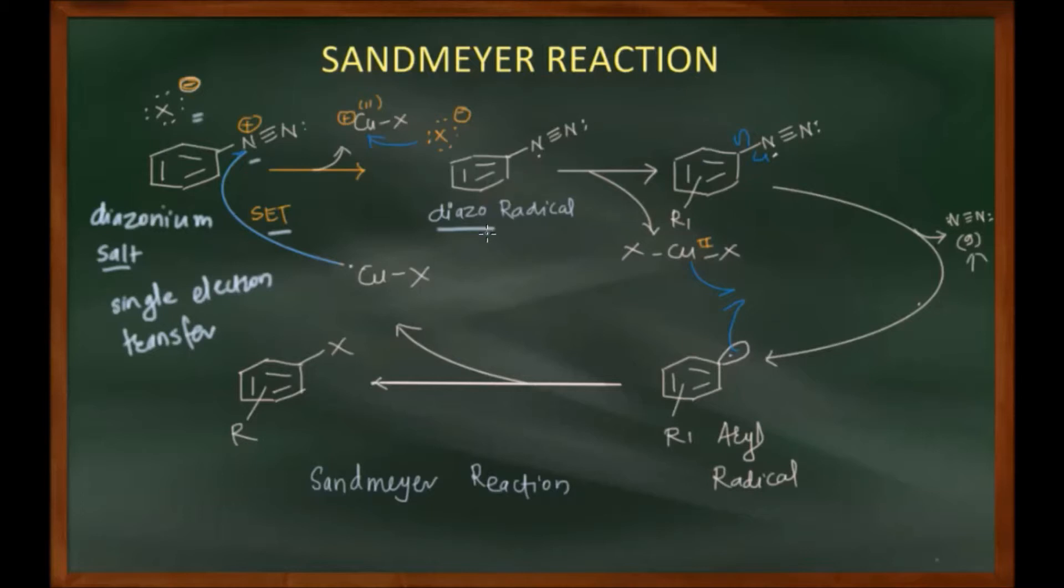Once there is formation of diazoradical, homolytic cleavage takes place. This bond breaks homolytically by free radical mechanism. One electron is transferred to the sp2 carbon of your aromatic system, and one electron is transferred to nitrogen which was already having one unpaired electron. So we will be getting neutral nitrogen gas which will be evolved in this reaction.